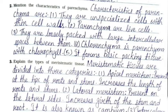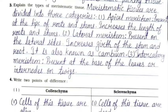Question 2: Mention the characteristics of parenchyma. Parenchyma cells are unspecialized cells with thin cell walls. They are live cells, loosely packed with large intercellular spaces between them. Chlorenchyma is parenchyma with chlorophyll. It forms the basic packing tissue. Question 3: Explain the types of meristematic tissue.